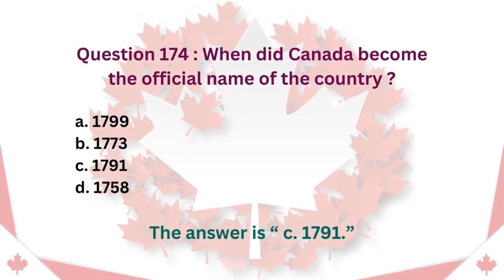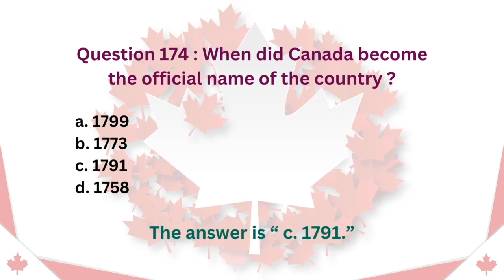Question 174: When did Canada become the official name of the country? A. 1799. B. 1773. C. 1791. D. 1758. The answer is C. 1791.